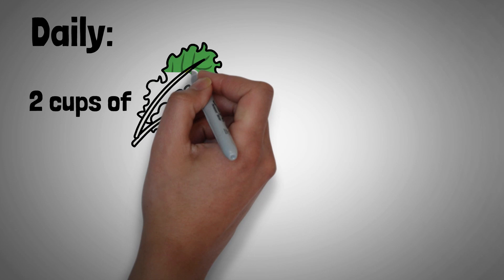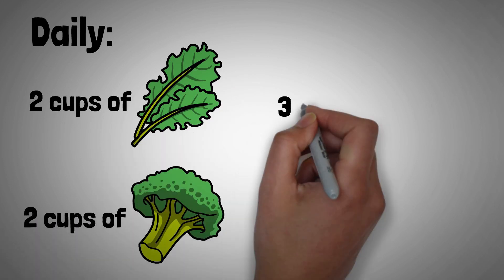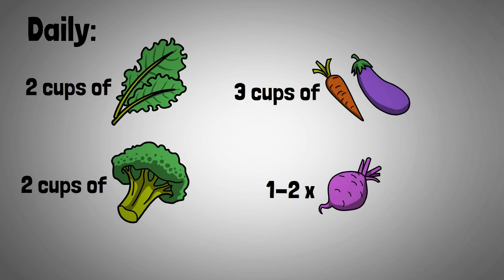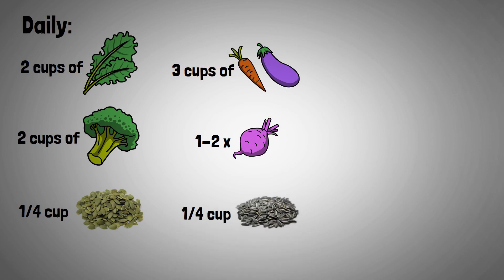So here is what they ate. Each day included 2 cups of dark leafy greens, 2 cups of cruciferous vegetables, 3 additional cups of colorful vegetables, 1-2 beets, a quarter cup of pumpkin seeds and a quarter cup of sunflower seeds,